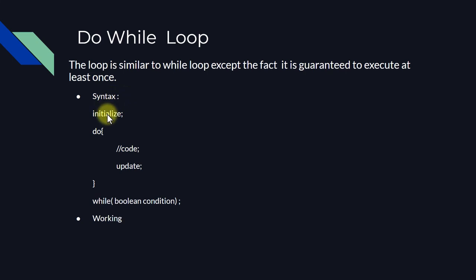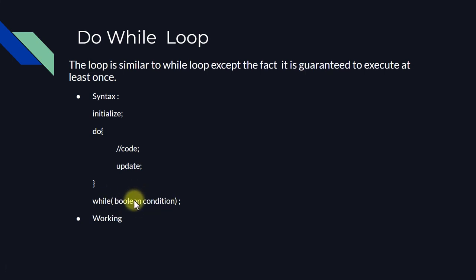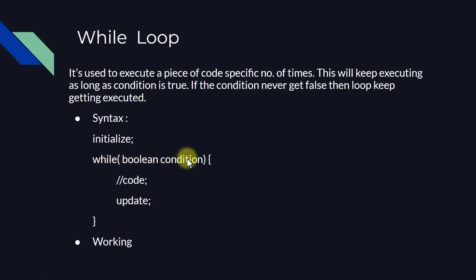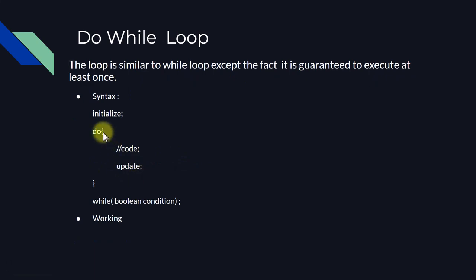In the syntax, first we initialize our code — whatever variable we need to initialize, we do that first. Then inside do, we execute our code without checking the condition, whether it's true or false. Then we write our update statement — whether we need to increment or decrement. Then we write our while condition.